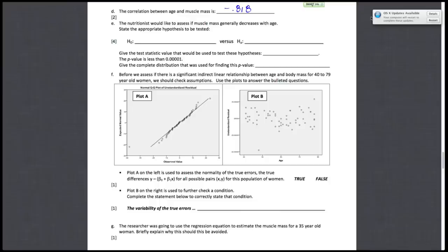Nutritionists would like to assess if muscle mass generally decreases with age. State the appropriate hypotheses to be tested. Well, remember, if we want to see that there is a relationship, the null hypothesis would be that beta equals 0. And what we want to see is if, as age increases, that muscle mass decreases. So we want to see if the relationship is that B1 is negative.